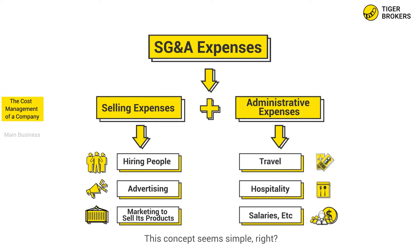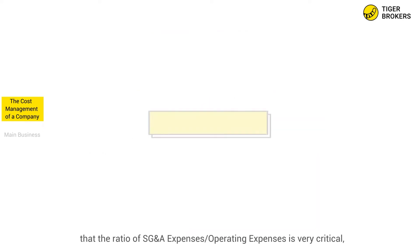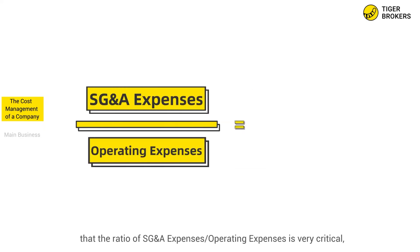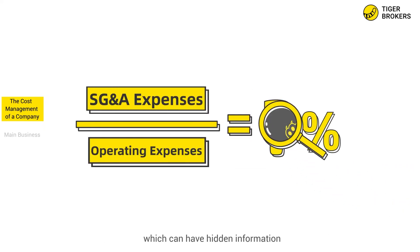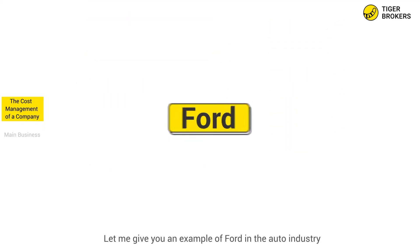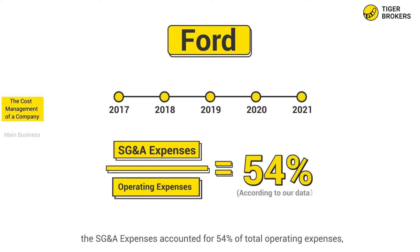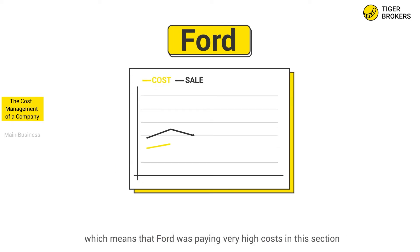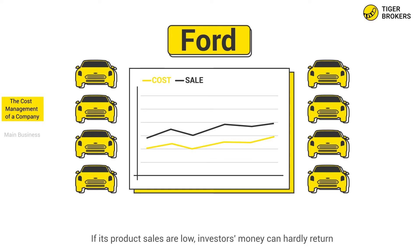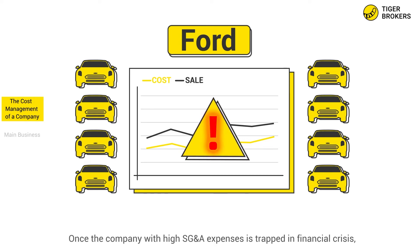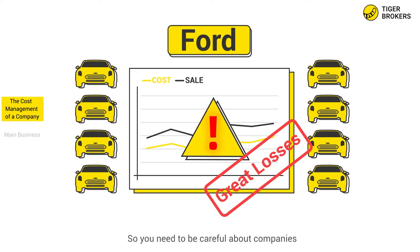This concept seems simple, but the ratio of SG&A expenses to operating expenses is very critical and can contain hidden information. For example, in the auto industry, Ford's SG&A expenses accounted for 54% of total operating expenses over the past five years, meaning Ford was paying very high costs. If product sales are low, investors' money can hardly return. Once a company with high SG&A expenses is trapped in financial crisis, investors are likely to suffer great losses.